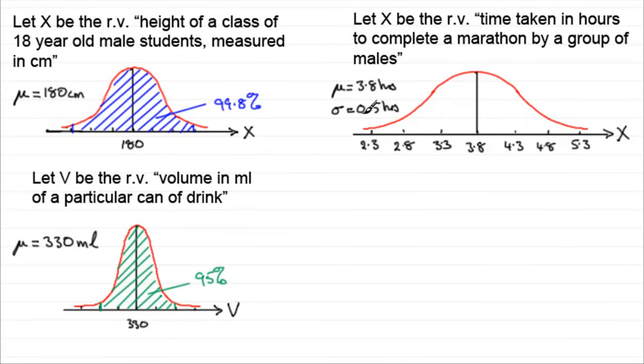So for this particular case, we would have 95% of our runners would finish between 2.8 hours and 4.8 hours. So hopefully you can see how important it is to know these proportions within certain limits.